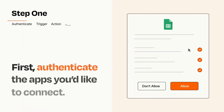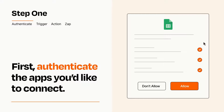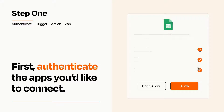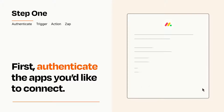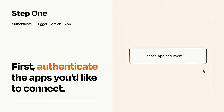It's easy. To get started, you'll just need to authenticate your apps, which takes just a few seconds. Zapier meets industry standards for encryption when connecting with each of your apps.